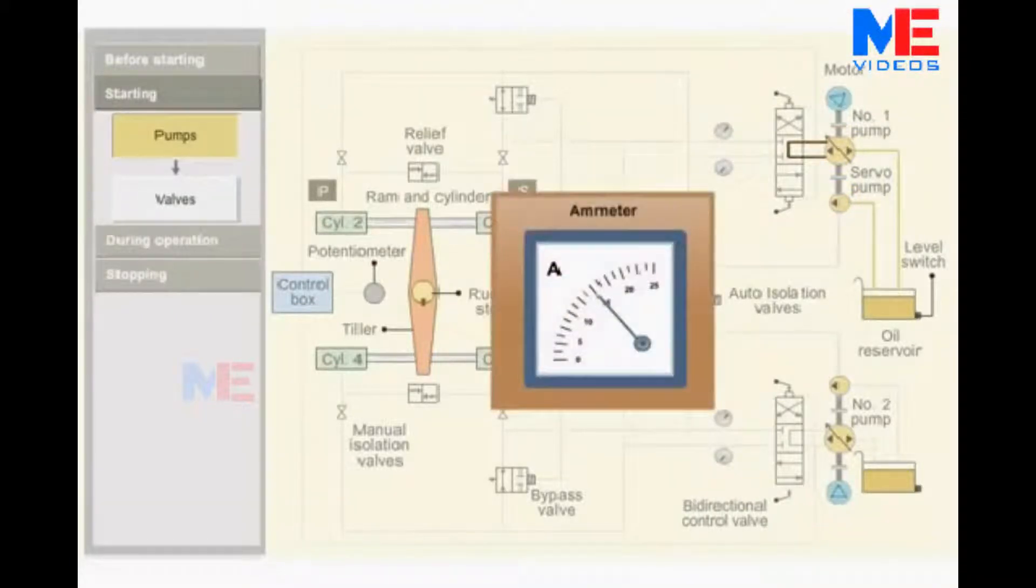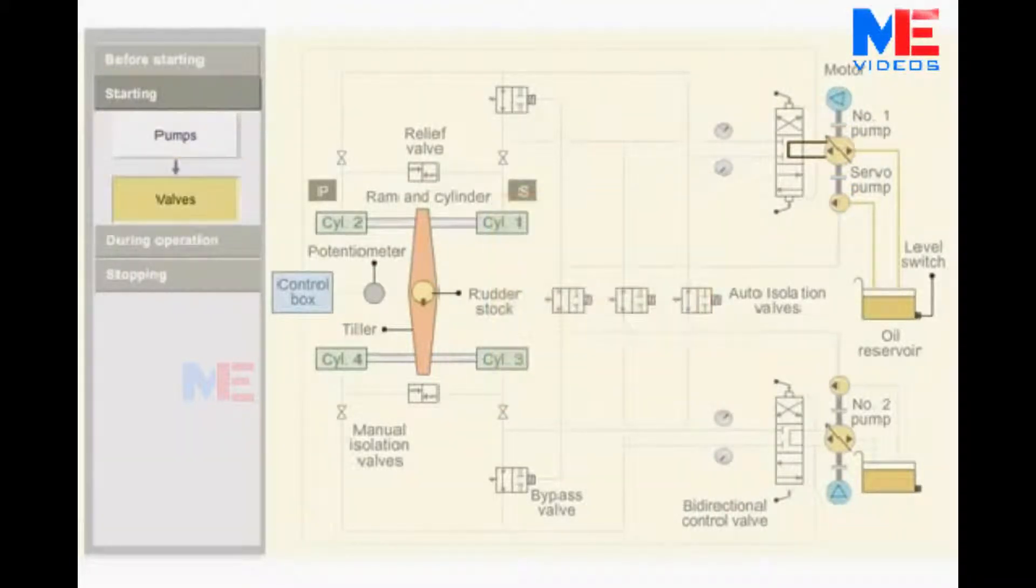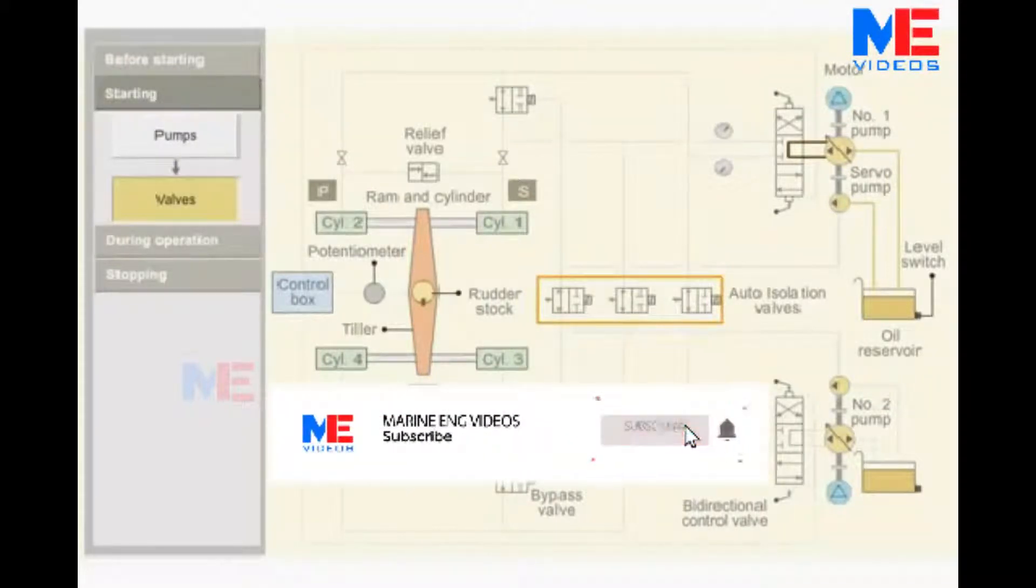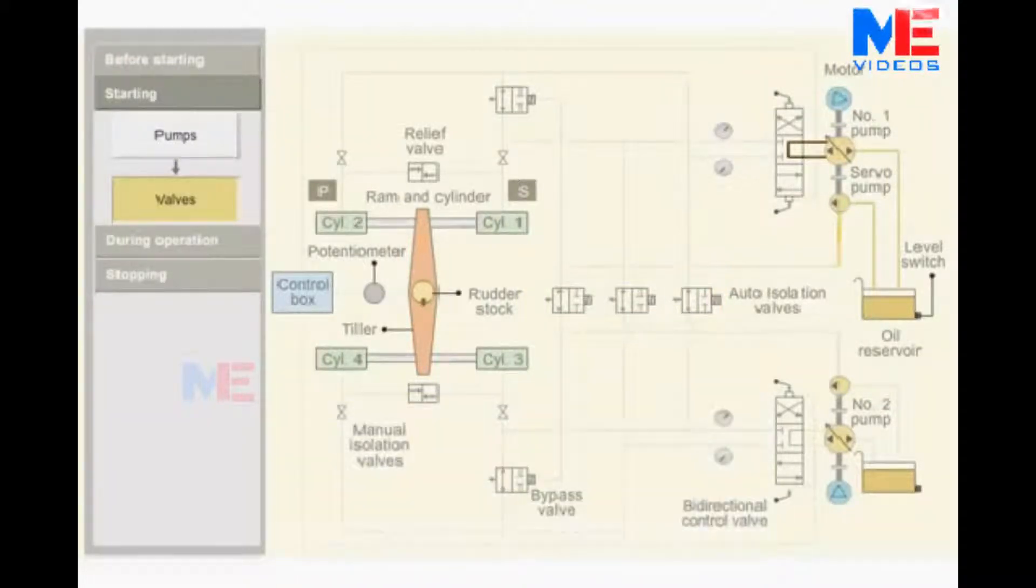Check the amperage of the motor. Electrically operated isolating valves are kept in open position. Bypass valve is activated to close position by the oil supplied by the servo pump.